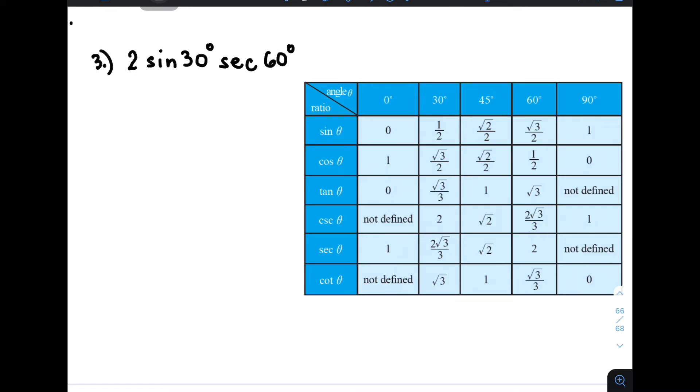For this one, you might be surprised that we have a coefficient of 2. So first, meaning you will multiply it by the value of sine and secant 60 degrees.